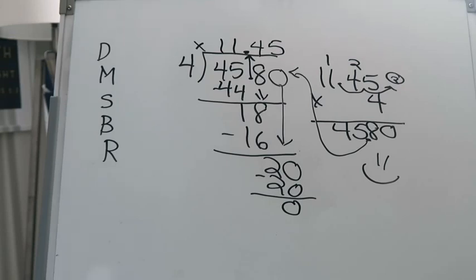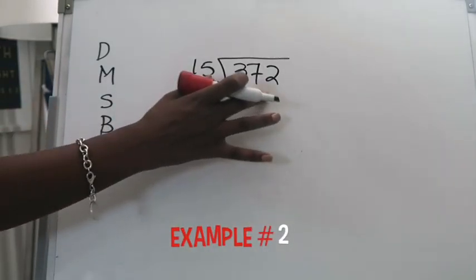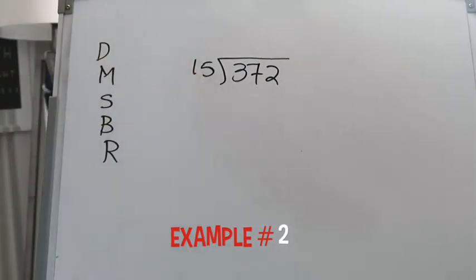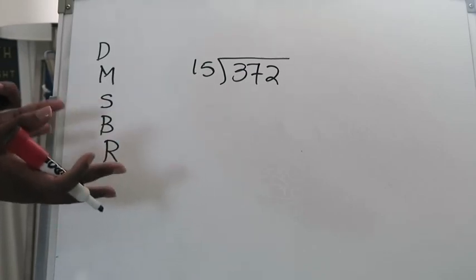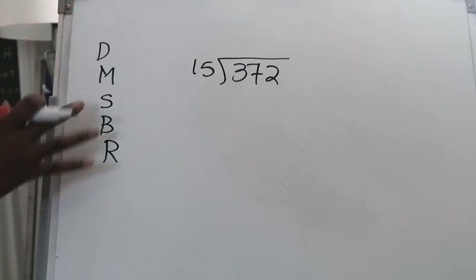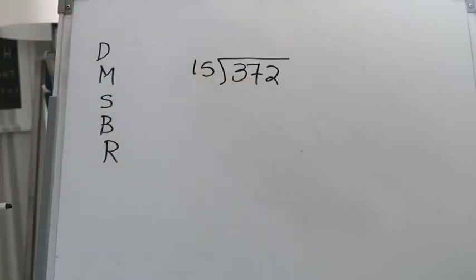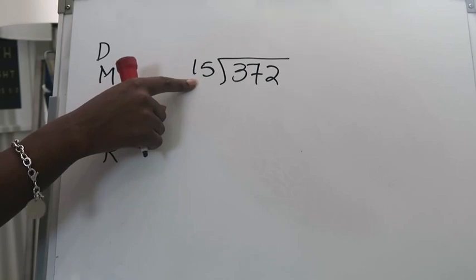So that was your first example. In this example you're actually taking a whole number 372 and you're dividing it by 15 and in this example we're going to learn how we can use adding a zero to represent what would be our remainder as a decimal. The division steps still stay the same.